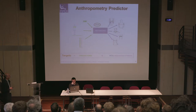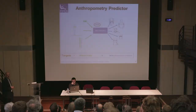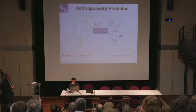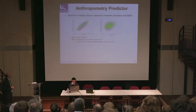In the anthropometric module, we start from some predictors, and from these predictors you can predict other measurements on the body. Both the predictors — BMI, shoulder circumference, and so on — and the measurements of interest chosen inside the database are targets for the deformation tools that have already been mentioned and will be discussed later. The anthropometric tools are based on one particular database.